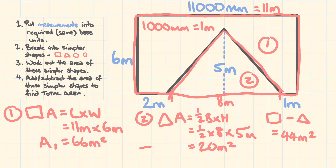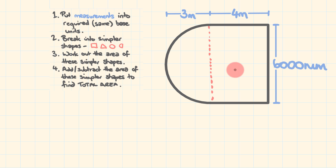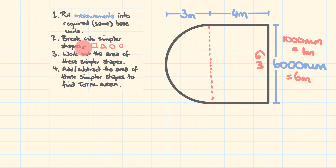For the final question, we have a rectangular shape with a semicircle — a half circle — attached to it. We're going to work out the area of the rectangle, then the area of the half circle, and add them together. First, put measurements into the required base units. I'd put this into meters: since there are 1,000 millimeters in a meter, this measurement converts to six meters. Now let's break it up into the simpler shapes: shape one is a rectangle and shape two is a semicircle.